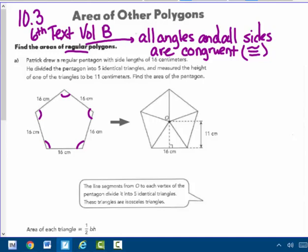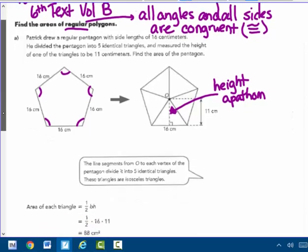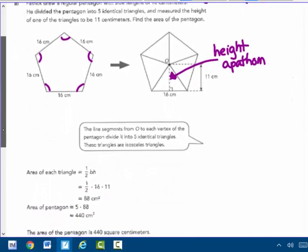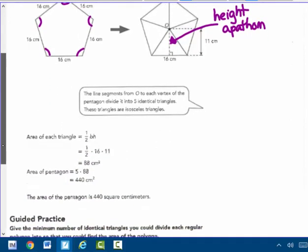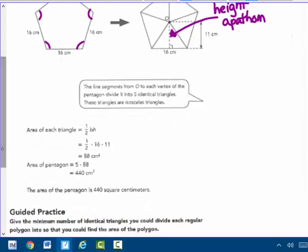The height of a triangle drawn inside has a special name. If you take a regular polygon and divide it into equal triangles, that height is called an apothem. If you split a regular polygon into equal triangles, then that height inside that triangle is called an apothem.